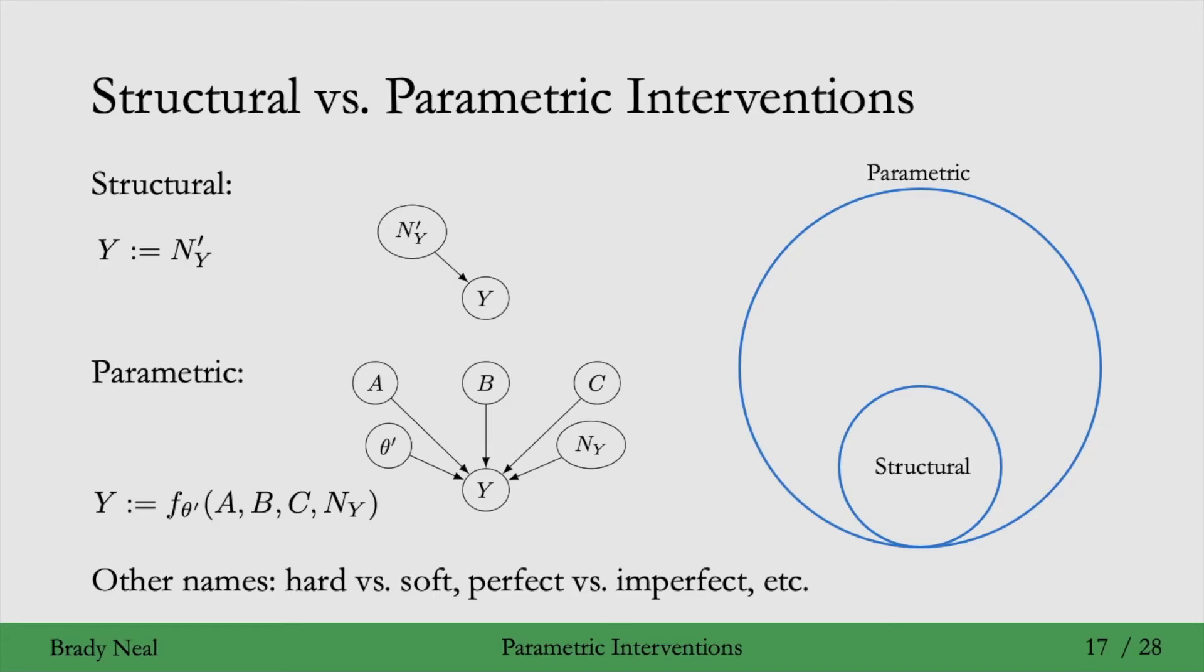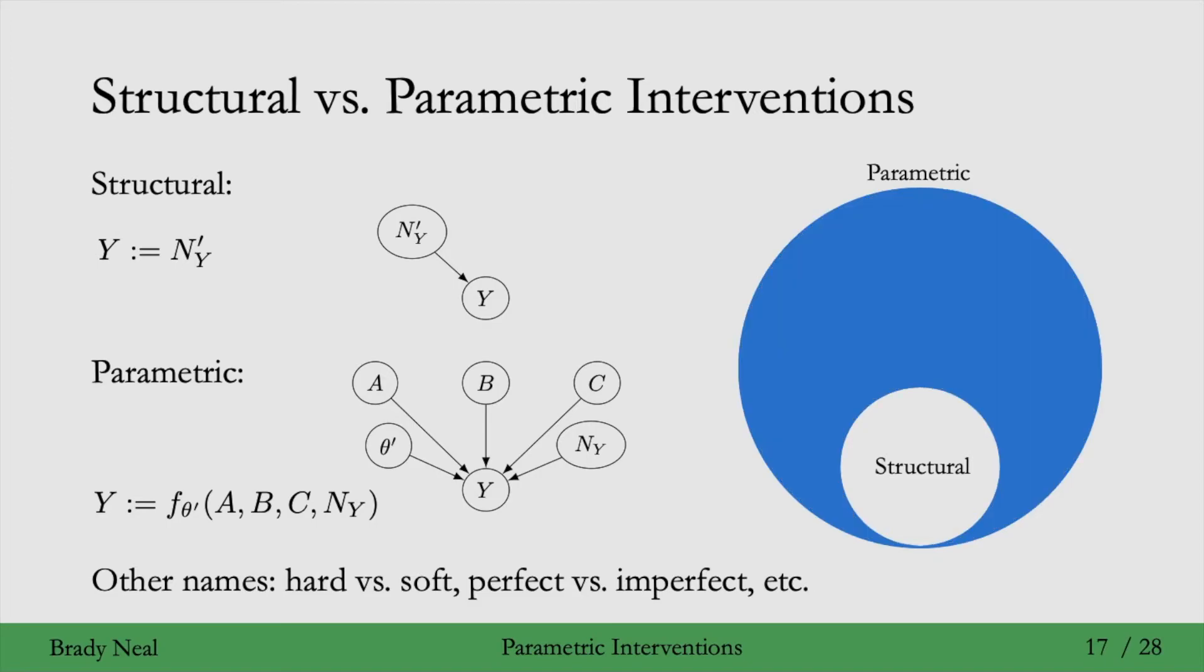However, it's common for people to refer to the difference as the parametric intervention - the parametric intervention set minus the structural intervention set - and call that the parametric or soft interventions. That's what we'll be considering now: parametric interventions that are not structural interventions. This means that after we've intervened on Y, Y still depends on all of its parents. We haven't destroyed the causal structure, and we'll see that not destroying the causal structure is useful for causal discovery.